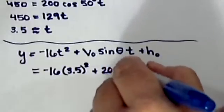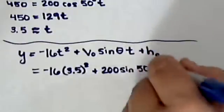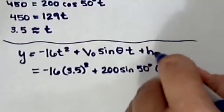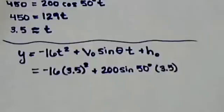This is going to be sine of 50 degrees times t, which is 3.5, plus our initial height. Well, it said we're hitting the ball off the ground, so the initial height would be zero.